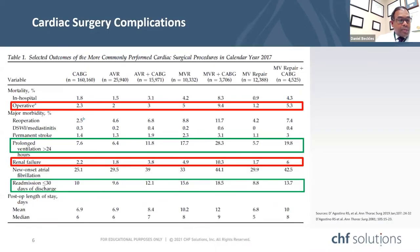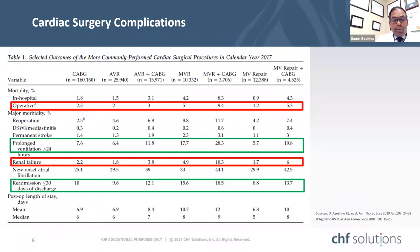The outcomes of these 233,000 cases from calendar year 2017 are shown in this table. Isolated CABGs have the lowest complication rate, but valve cases have complication rates and mortality as high as 9.4%. Morbidities include prolonged ventilation as high as 28%, renal failure as high as 10.3%, new onset atrial fibrillation as high as 44%, and readmission rates as high as 18%.